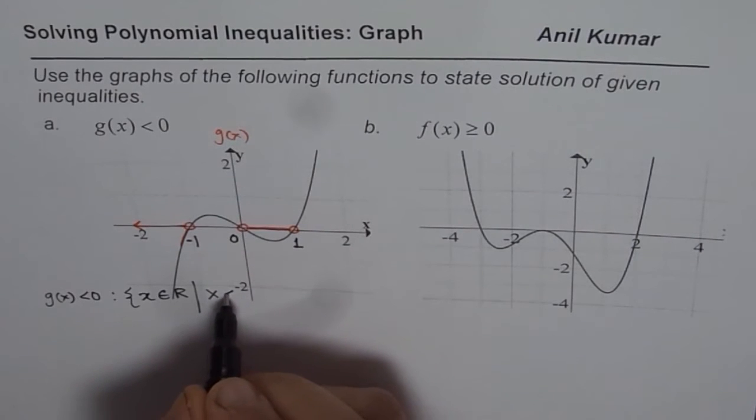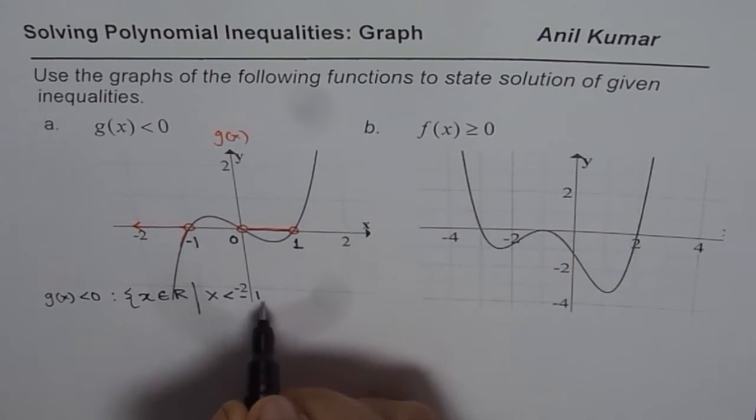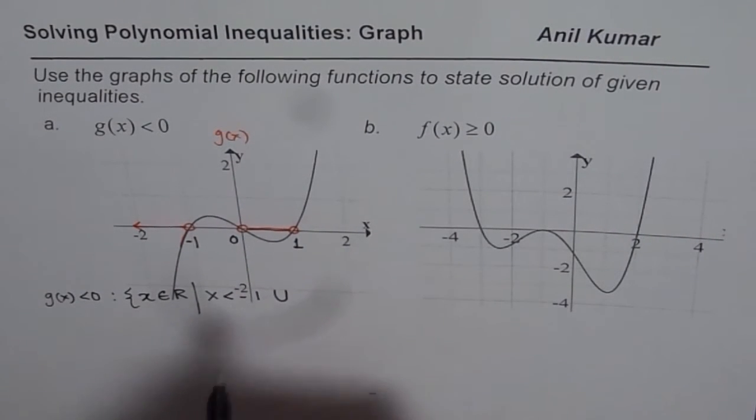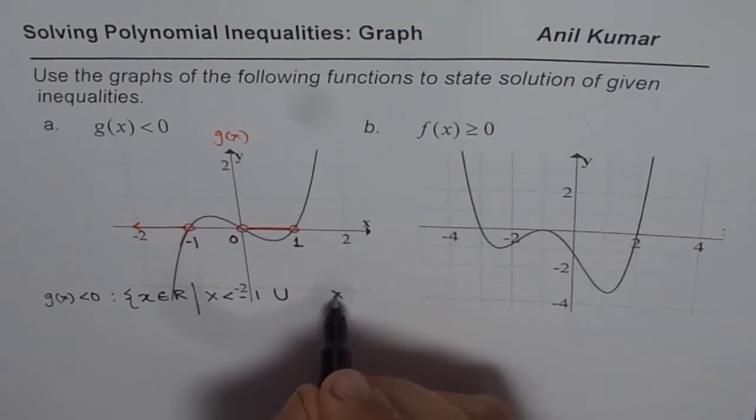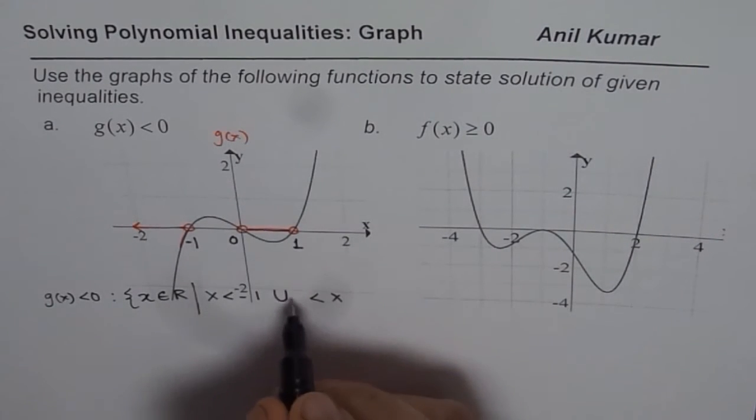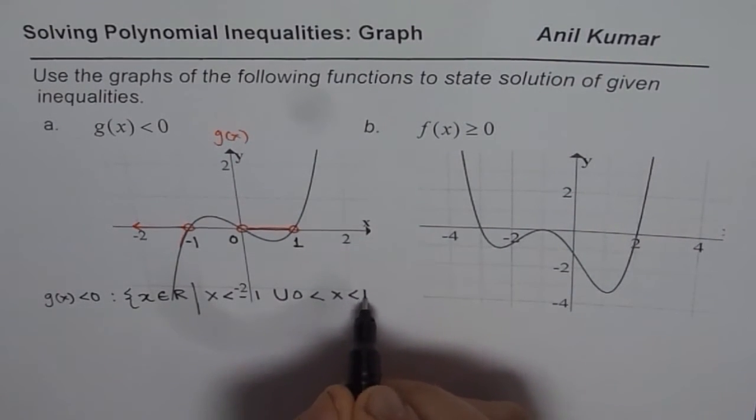here we have 0 and here we have 1. So we say x is less than minus 1, union, and where x is between 0 and 1.